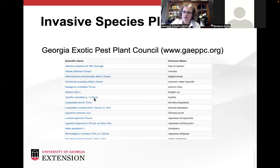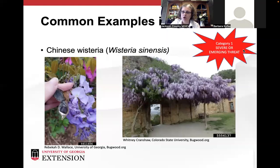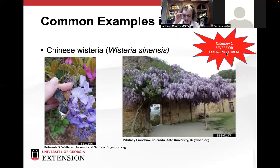I started with the red category one — called 'severe or emerging threat' in the GAEPC plant list. These are plants known to be causing current economic or biological damage to the ecosystem. Chinese wisteria is one everyone is probably familiar with. It's native to China, and its cuttings were brought over in 1816 by the East India Company. It was brought to Europe and then here with the colonies, grown as a shade cover over porches and things.